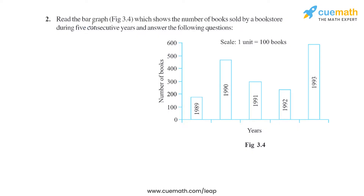Question 2 of this exercise says: read the bar graph which shows the number of books sold by a bookstore during 5 consecutive years and answer the following questions. There are four sub-parts in this question.